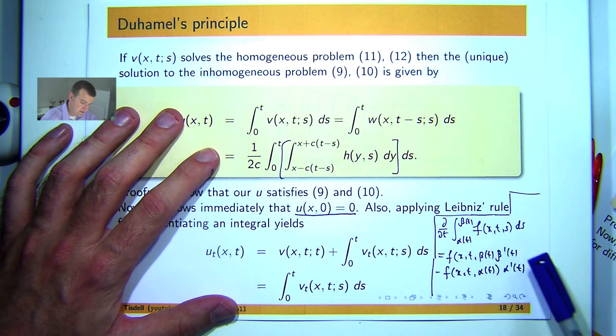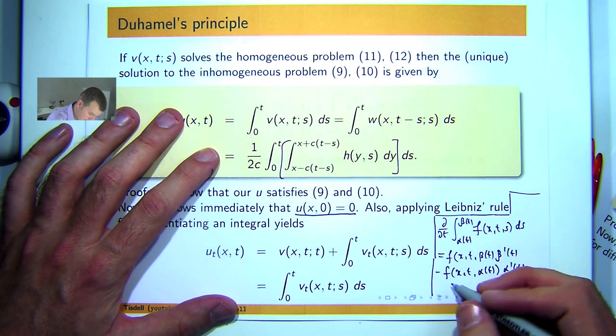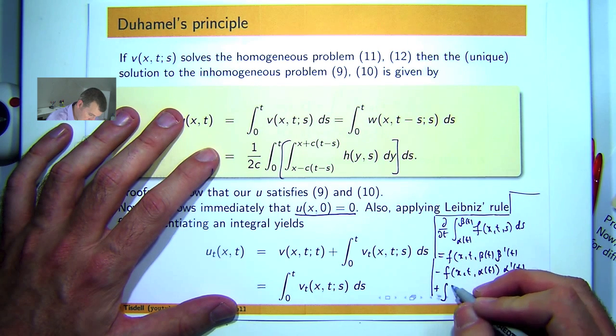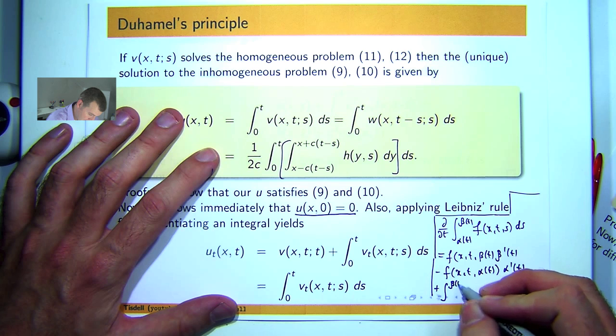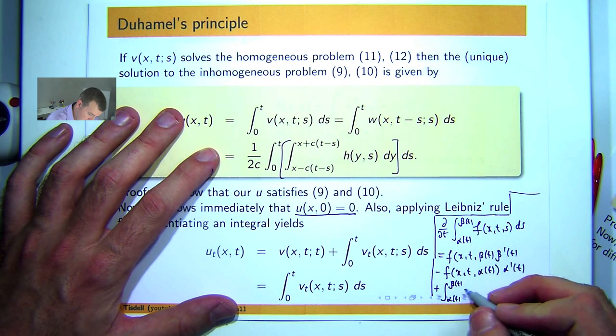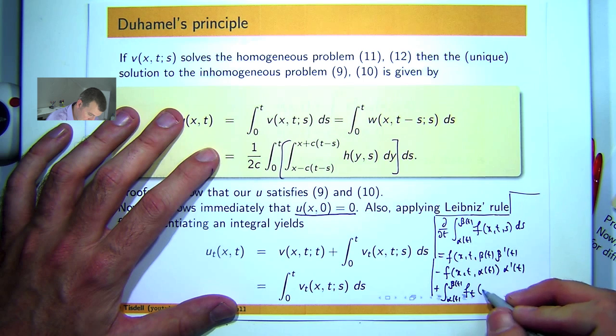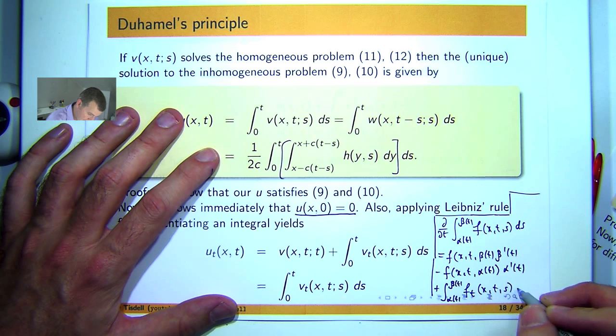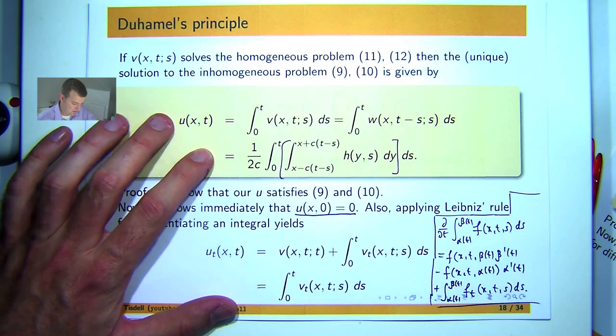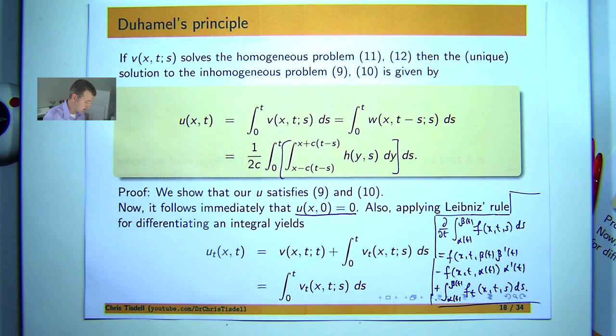Now, if alpha and beta are constants, then these things are zero. And the last step is just to push this inside the actual integral sign. So you push that in, it'll go to a partial derivative of f. So that is Leibniz rule right there in a nutshell. It's a bit messy, but it's very useful for the study of partial differential equations.